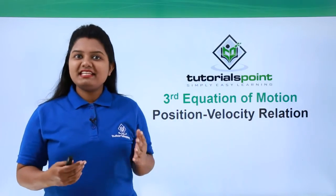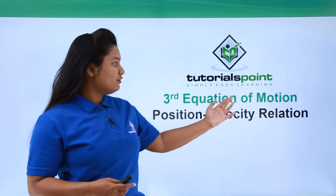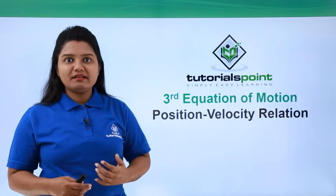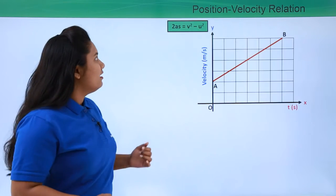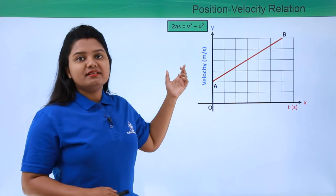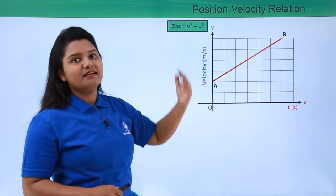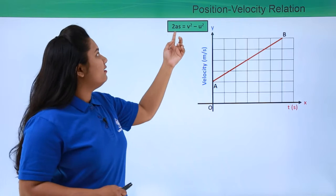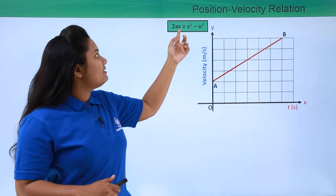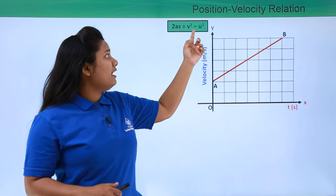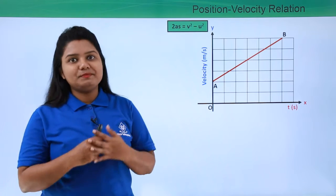Hello everyone. In this video we will be deriving our third equation of motion, which is otherwise called the position-velocity relation. We already know the third equation of motion: 2as = v² - u², where a is the acceleration of the body, s is the displacement, and v and u are the final and initial velocities of the body respectively.